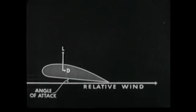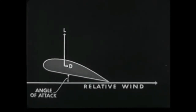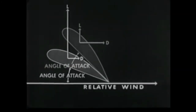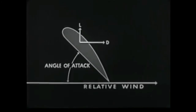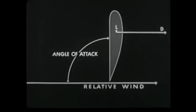Wind tunnel tests show how lift and drag vary with the angle of attack of an airfoil. In general, as the angle of attack increases, lift and drag increase up to a point where lift decreases abruptly and drag becomes the principal component. This is known as the stalling angle. From this angle to 90 degrees, drag continues to increase while lift falls off. At 90 degrees, the airfoil acts like a flat plate — it has maximum drag and negligible lift.